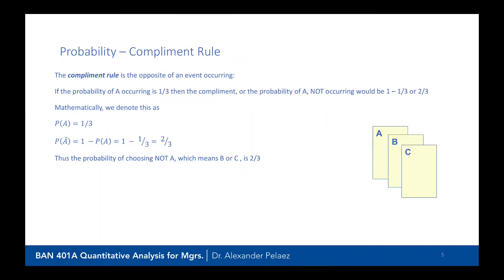The complement rule refers to the opposite of an event occurring. If the probability of A occurring is one-third, then the complement — the probability of A not occurring — is one minus one-third, which equals two-thirds. Mathematically, the probability of A equals one-third, and the probability of A complement equals one minus the probability of A, giving us two-thirds. So the probability of not choosing A, meaning choosing B or C, is two-thirds.